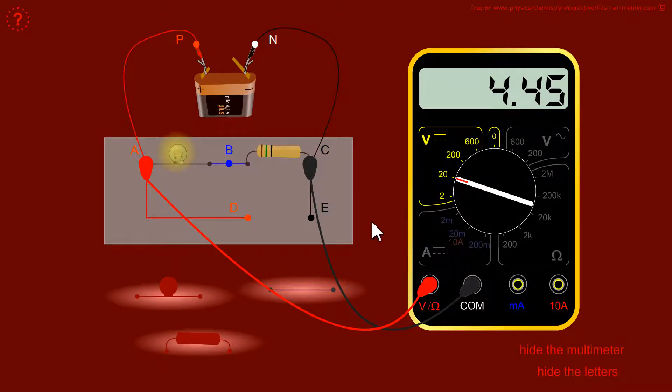Across the lamp, there is 1.73 volts. And across the resistor 2.72 volts.